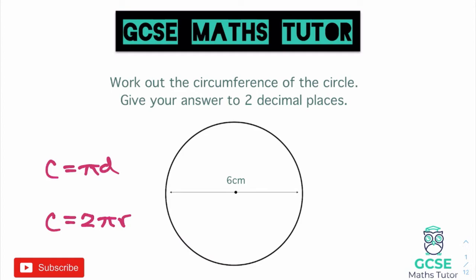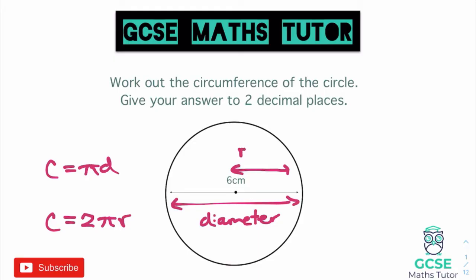The d and r stand for diameter and radius. The diameter is the distance all the way across through the centre of a circle. The radius is half of that — just from one side to the centre. These are the two important measurements we'll be using for area and circumference of circles.